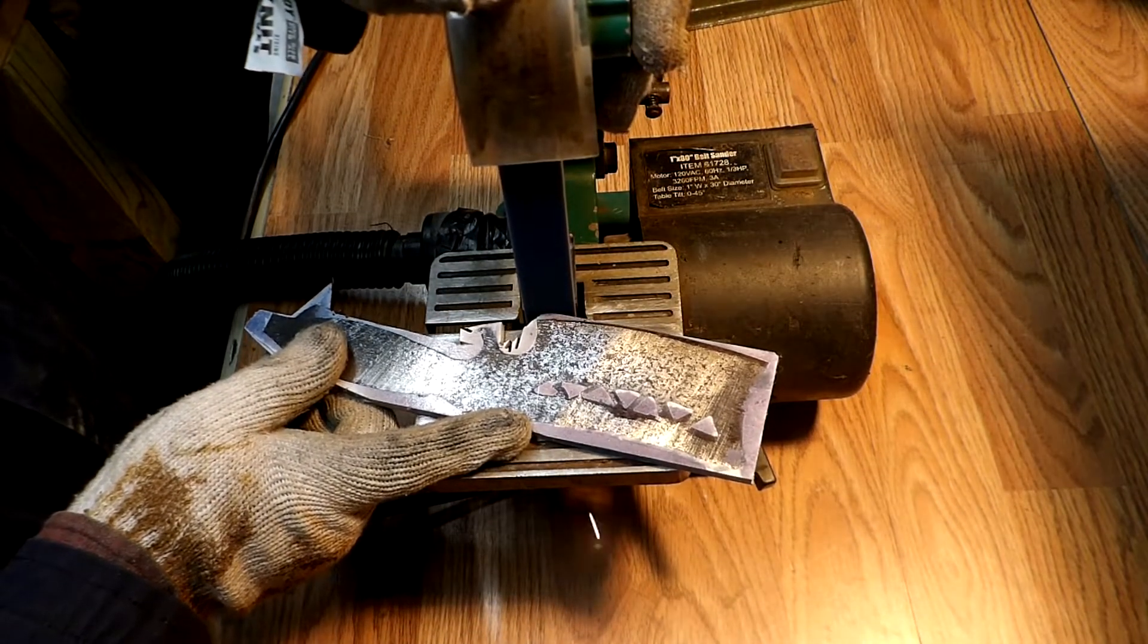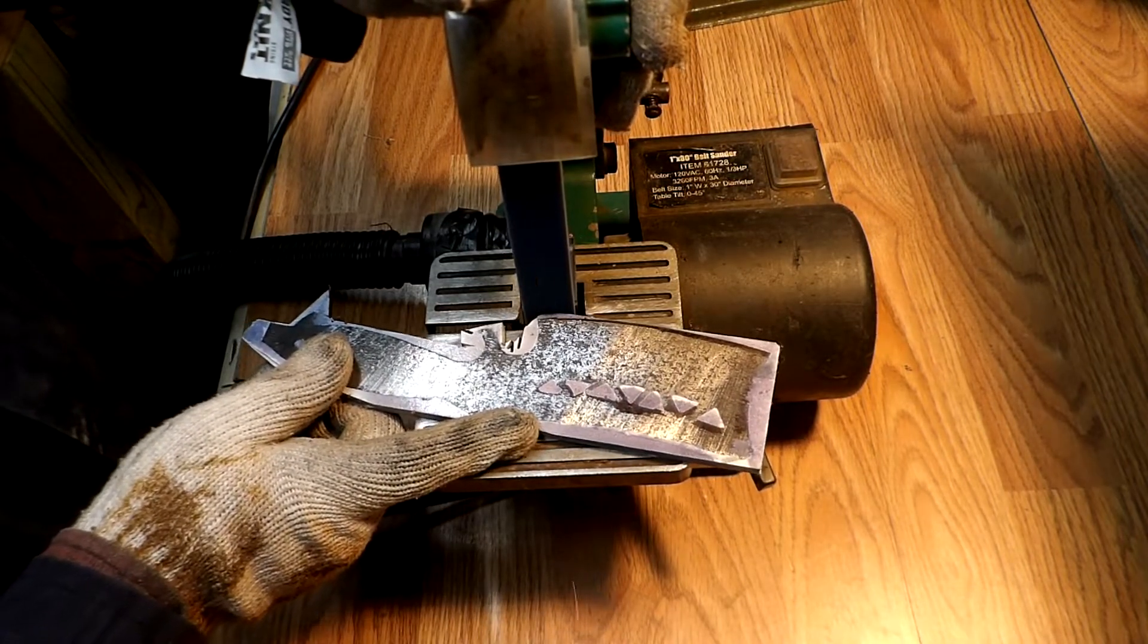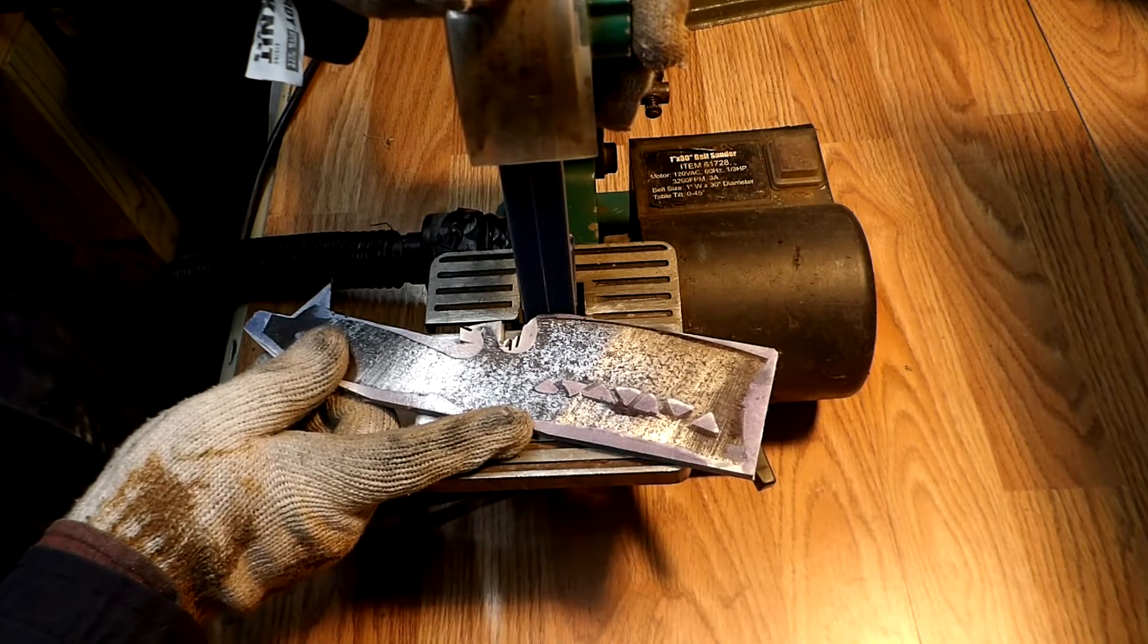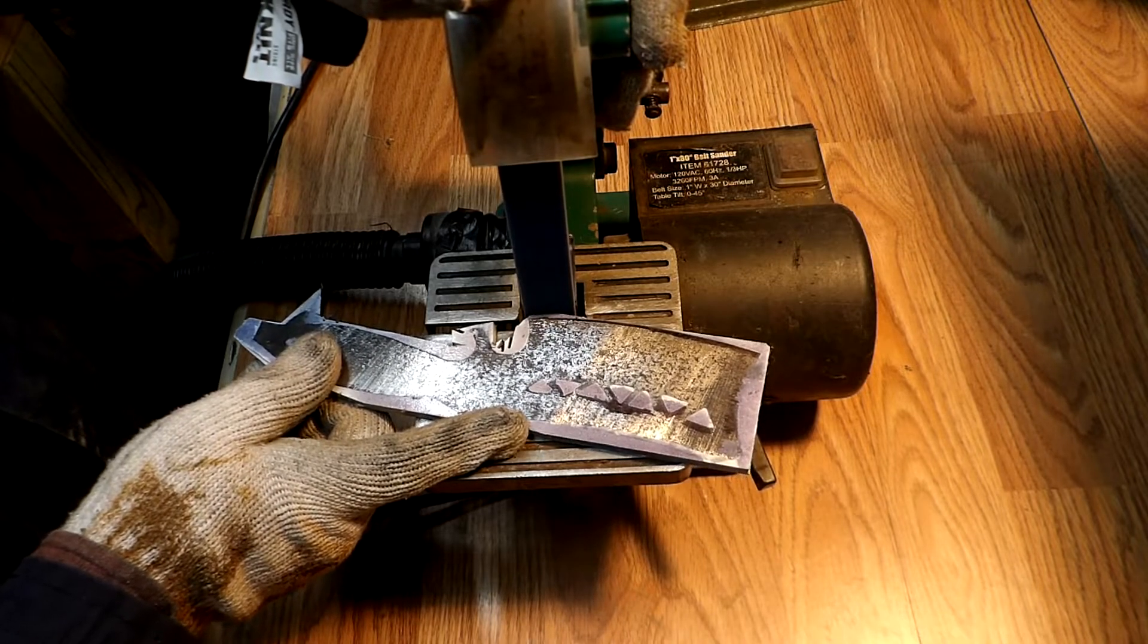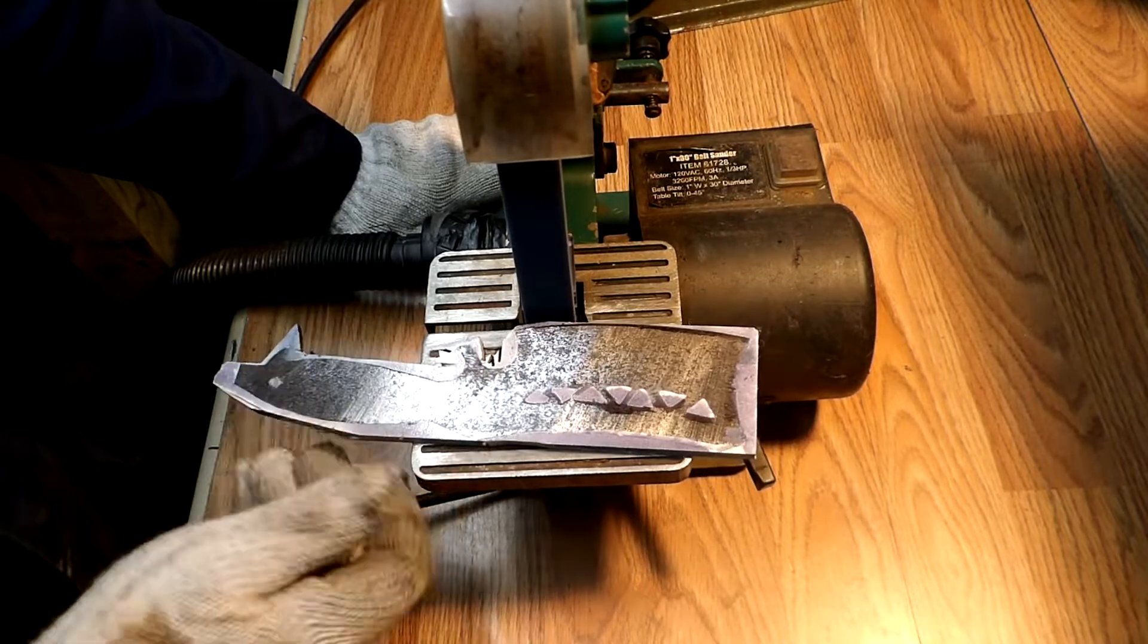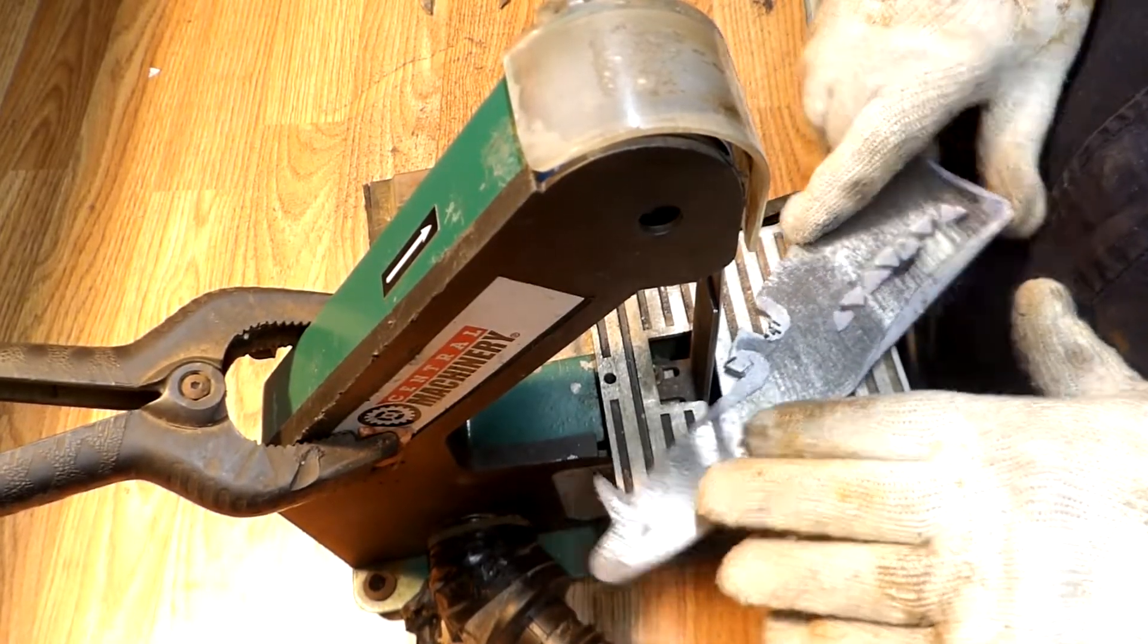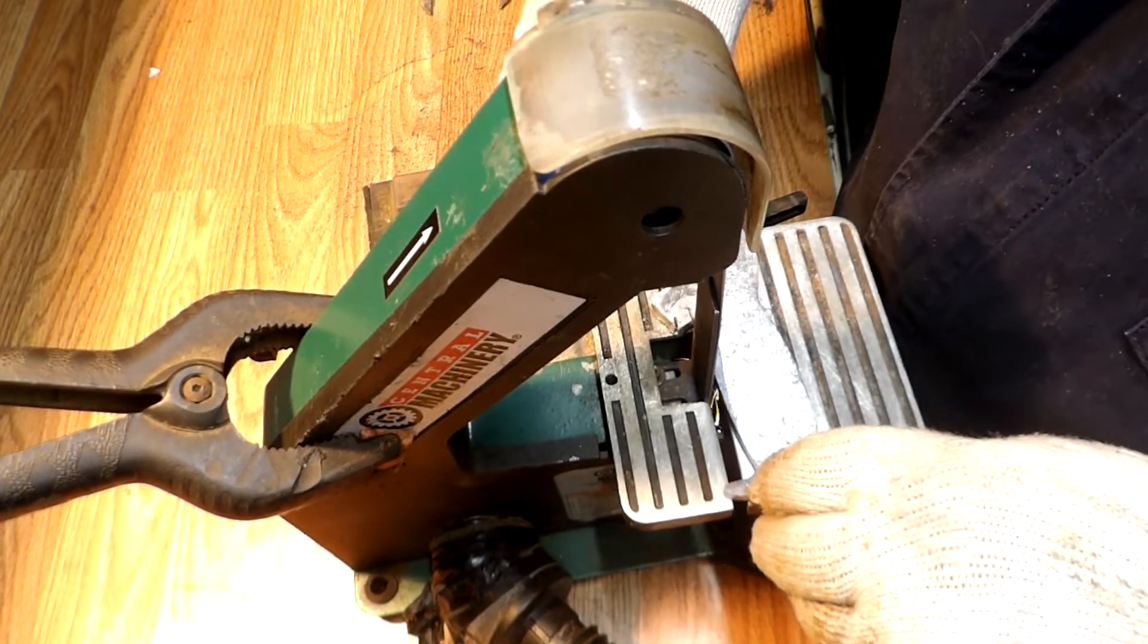What I'm doing right here guys is using my one by 30 Harbor Freight belt sander to sand off the material that I will not be needing. I'm just giving it a good profile and removing the excess material.